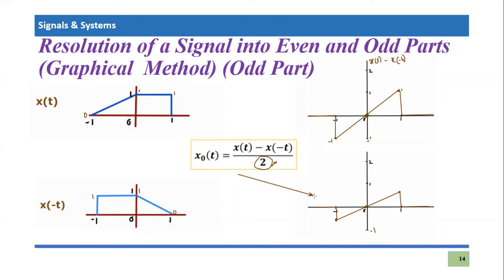You can verify this is actually the odd part: if we flip it across the y-axis and then over the x-axis, both parts of the signal overlap at t = 0. So I hope you have understood how one can resolve a signal into even and odd parts using a graphical method. If you have any queries, you can post them in the comment section. Thank you so much for listening.